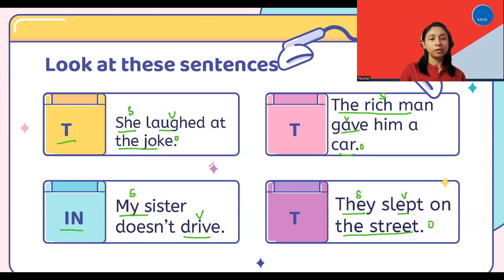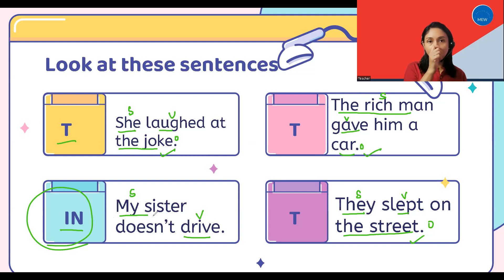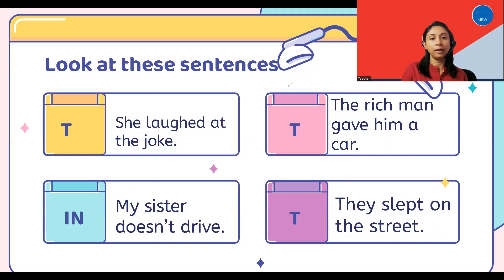So now, what is the difference between these sentences? In all the sentences with transitive verbs, as you can see, they have objects. A transitive verb is present when an object is there in the sentence. On the other hand, in the sentence 'My sister doesn't drive,' we do not have an object. So this is a very easy way for you to identify transitive or intransitive verbs in a sentence.